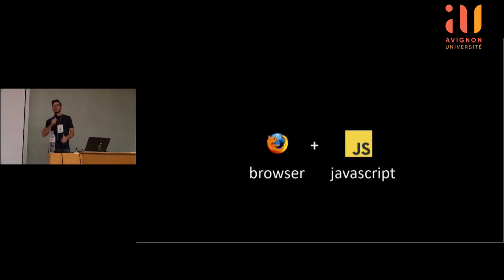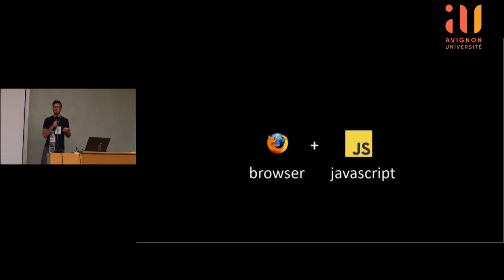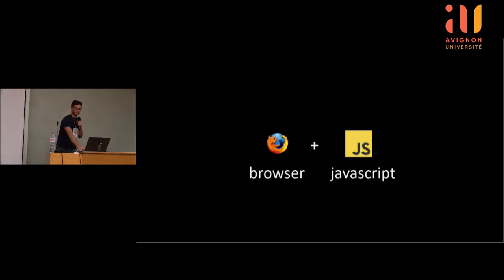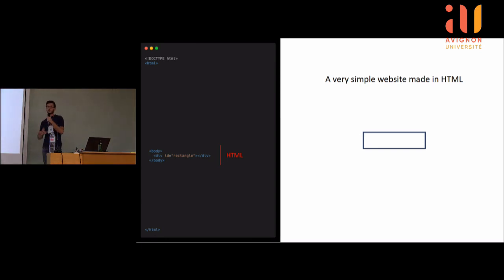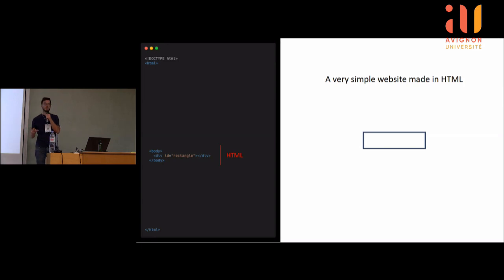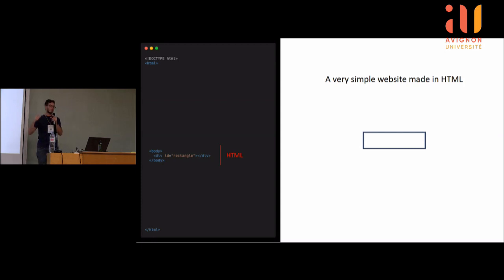Pour faire un graphique interactif sur le web, il faut deux composantes : un browser comme Firefox, et du JavaScript. Un site web, c'est juste un fichier avec une extension .html et un peu de code dedans. Si je prends un script de cinq lignes de code, que je l'enregistre en index.html sur mon bureau et que je double-clique dessus, j'ai un site web. Ce site web tout simple contient juste une div — une balise, un carré — et je me retrouve avec un rectangle.